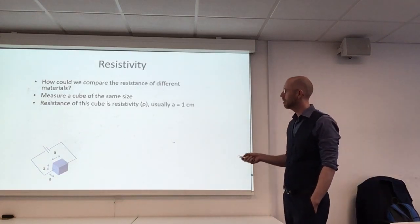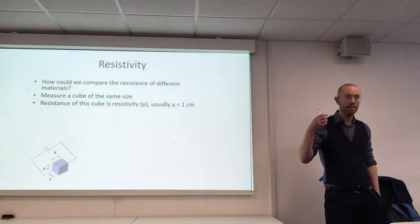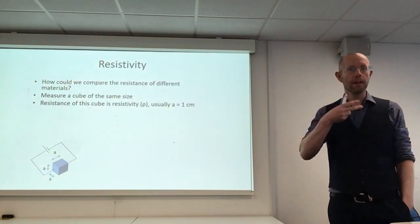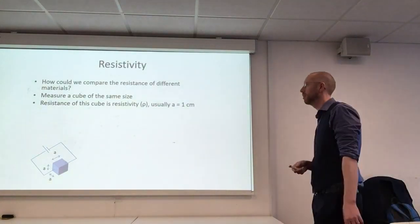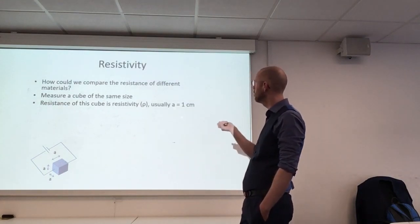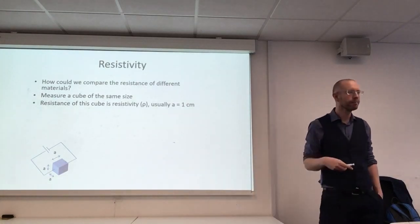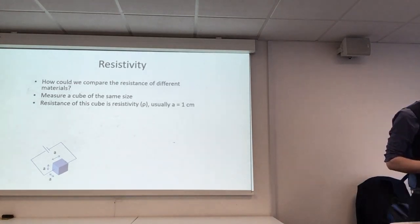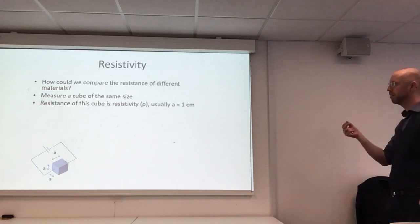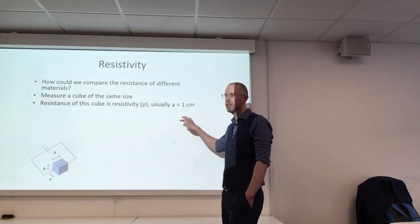We say that the resistance of this standard cube is what we call resistivity. Resistivity is the material-specific resistance that allows comparison between different materials. It's given the symbol ρ (rho), and it's defined for a one cubic centimetre cube — a cube that is one centimetre on each side. That is our definition of resistivity: the resistance of a one centimetre cube of the material.